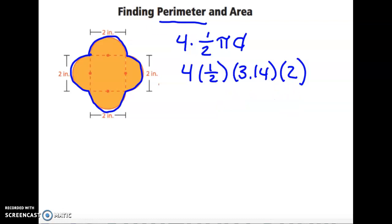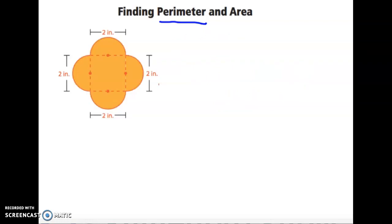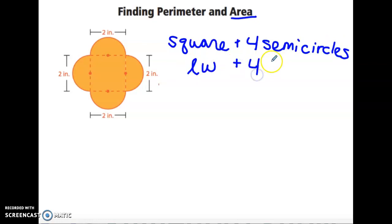And now let's go back and do the area. So we have the square plus four semicircles. Square is length times width plus four semicircles. For semicircles we need half, and area of a circle is pi r squared.